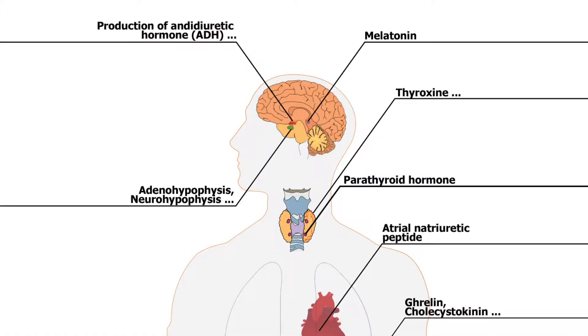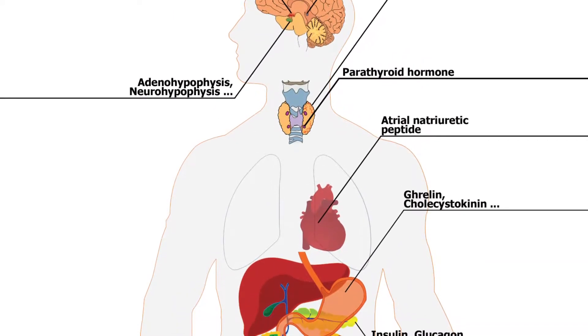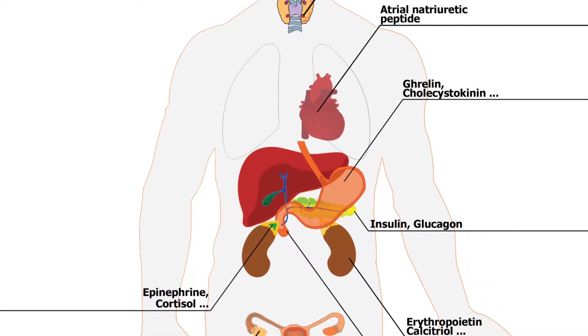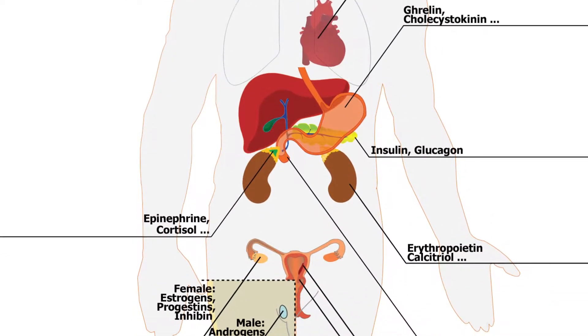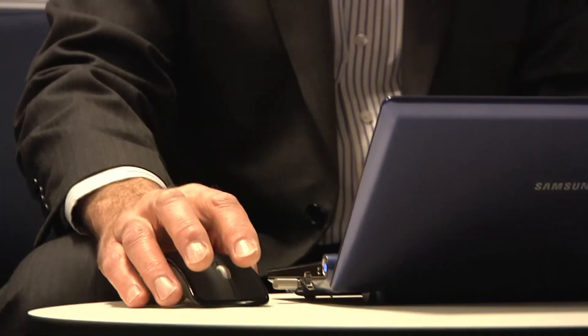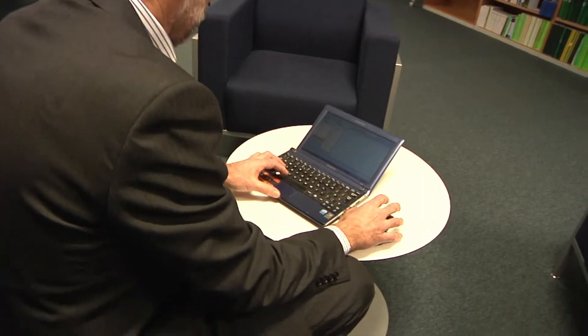The endocrine system is important for human and animal health because it regulates and controls hormones and important functions like metabolism, growth, development, sleep and mood. And this importance increases at critical life stages such as infancy and childhood.